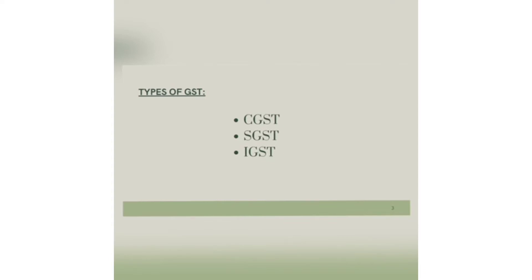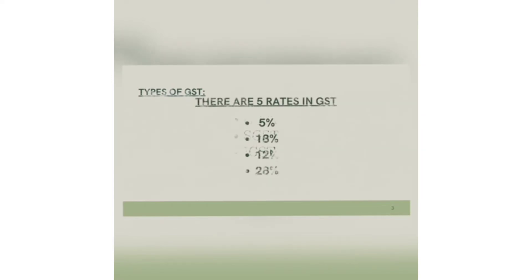CGST is levied by the Central Government, SGST is levied by the State Government, and IGST is levied by the Central Government. There are five rates in GST: 5%, 12%, 18%, and 28%, which vary for different goods.